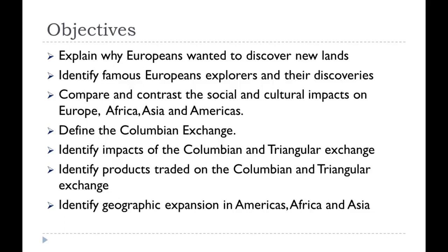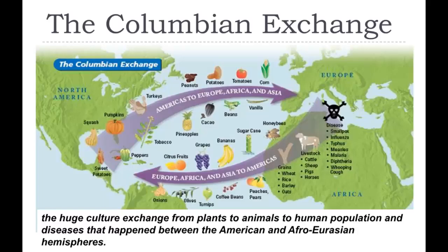We're going to look at the geographic expansion in the Americas, Africa, and Asia. The Columbian Exchange is named after Christopher Columbus because he was the first to come over — he landed in the Dominican Republic, Hispaniola, and several other areas. They started bringing back goods to Europe: corn, tomatoes, potatoes, vanilla beans from Central America, chocolate from the Aztecs, pineapples, tobacco from the Americas, peppers — they didn't have peppers in Europe.